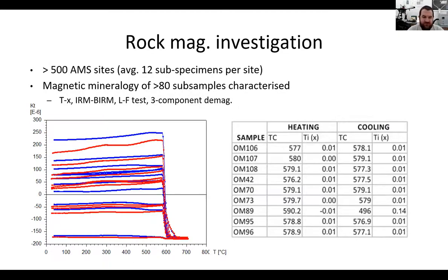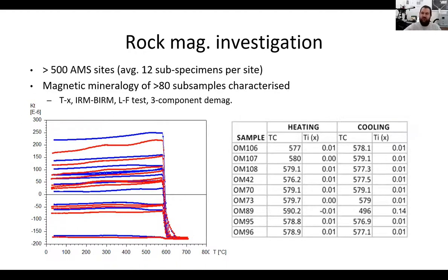The first part of our investigation is a robust rock magnetic characterization. Building on from what Tobias was discussing earlier, AMS isn't as simple as just taking a measurement and presuming it reflects what you think it should. We collected over 500 sample sites across these intrusions, averaging 12 sub-specimens per site. We've characterised the magnetic mineralogy of more than 80 samples using temperature-versus-susceptibility, IRM acquisition and backfield IRM, the Lowrie-Fuller test, and three-component demagnetization tests — all with a view to constraining the magnetic carriers so we can distinguish normal from inverse or hydrothermal fabrics, and strip away fabrics associated with post-emplacement solid-state processes or hydrothermal alteration.